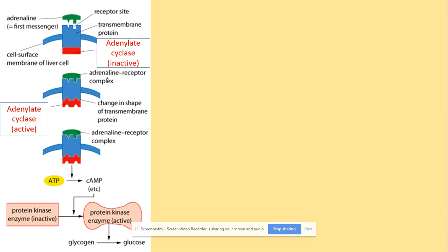Once adrenaline binds and forms the adrenaline-receptor complex, the adenylate cyclase becomes activated due to a change in shape — you can clearly see the difference. This active adenylate cyclase complex then catalyzes a reaction where ATP is hydrolyzed to cyclic AMP, which acts as a second messenger and activates another protein called protein kinase enzyme. Protein kinase changes shape, becomes activated, and can then catalyze glycogenolysis — the hydrolysis of glycogen to glucose.